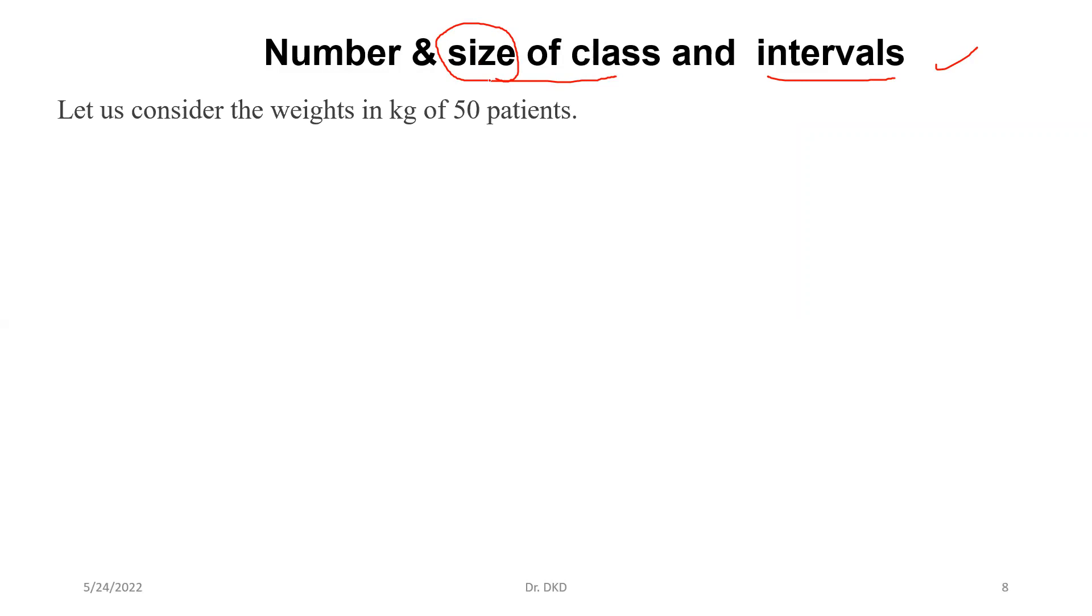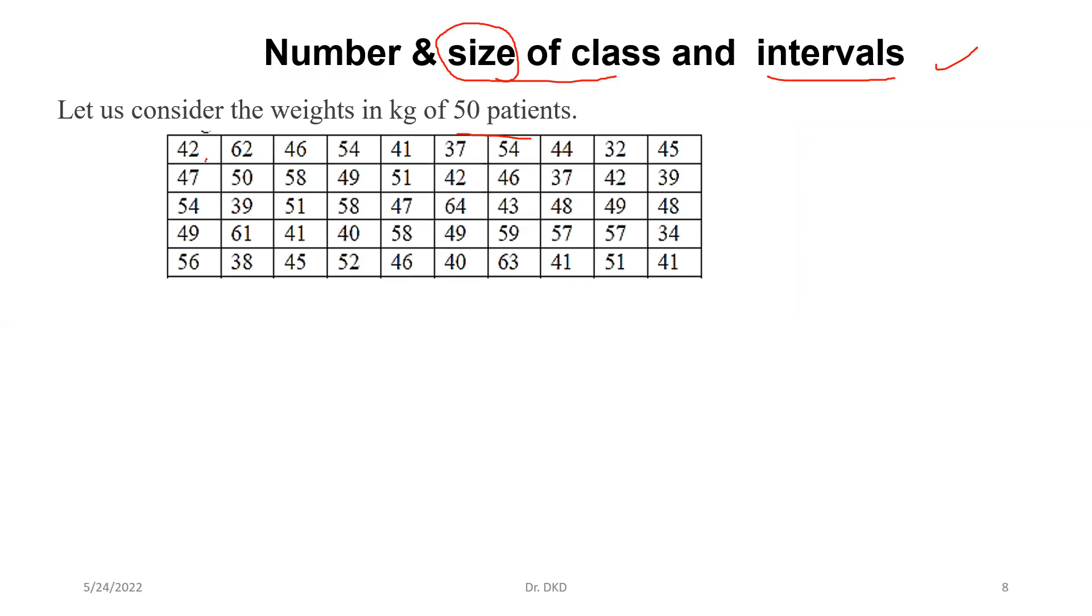For example, let us consider the weights in kg of 50 patients. Each patient's weight is given individually. So the total sample is 50. This is known as ungrouped data and we want to convert it to grouped data. But what is the procedure? What is the mechanism? How many groups should we create and what would be the size of the group? We will try to understand in this video.